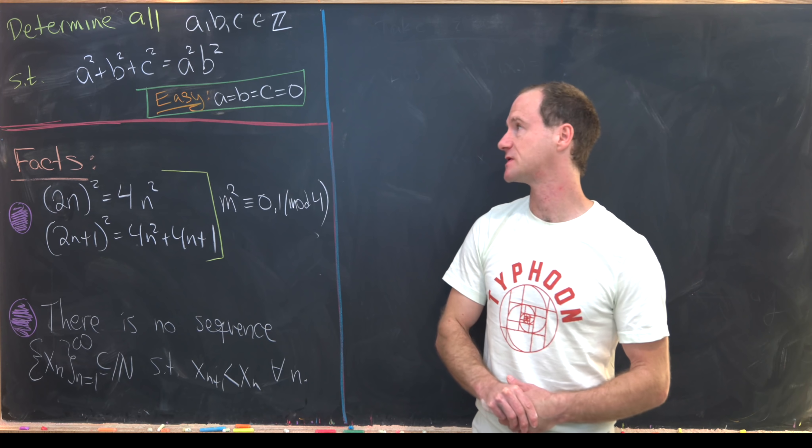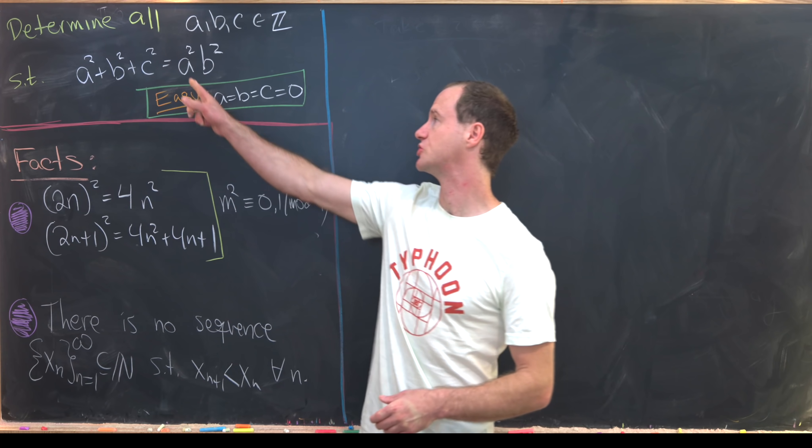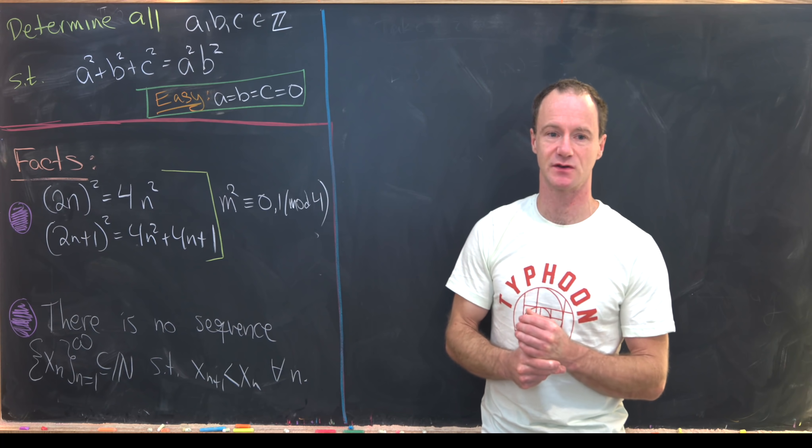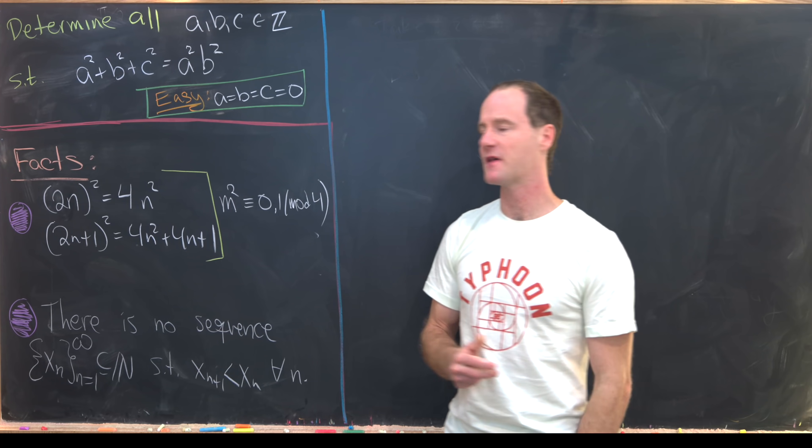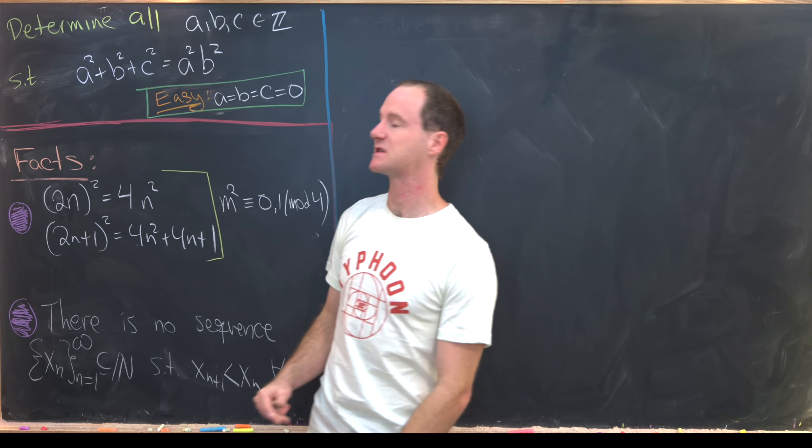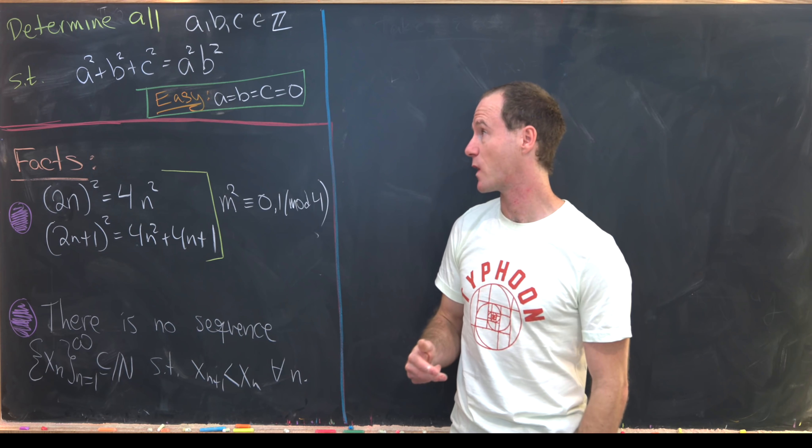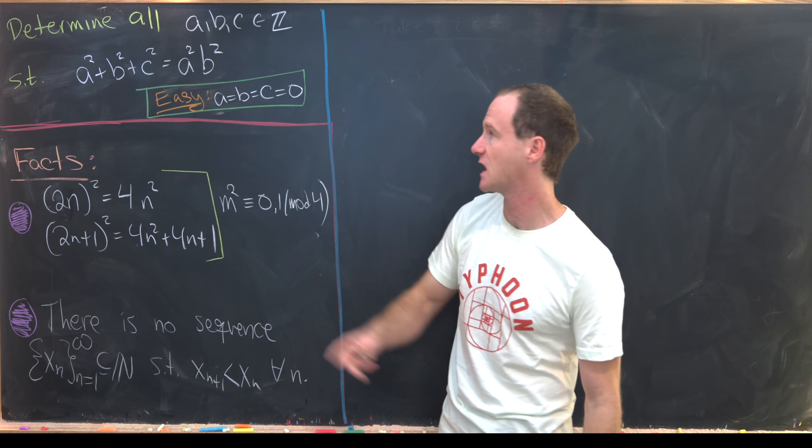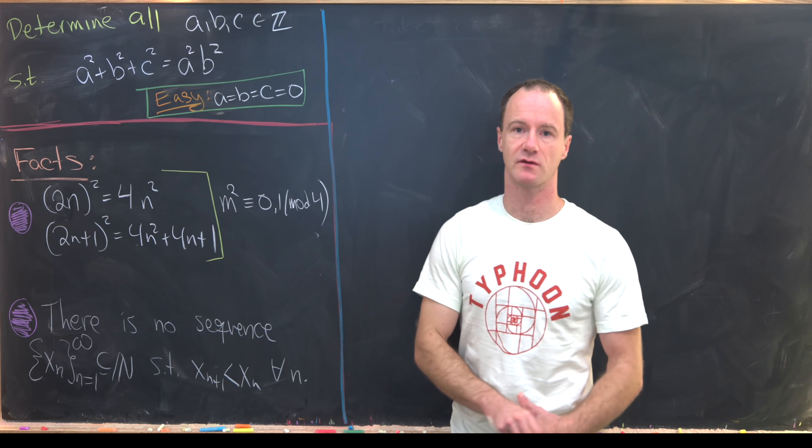So we've got a² + b² + c² = a²b². What I like about this is that we're mixing this combination of these squares via addition on the left-hand side with multiplication on the right-hand side.